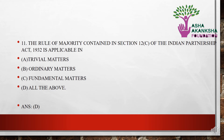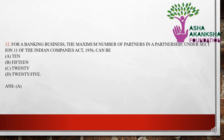The next question is: the rule of majority contained in Section 12, clause (c) of the Indian Partnership Act 1932 is applicable in which of the following? Options: (a) trivial matters, (b) ordinary matters, (c) fundamental matters, or (d) all of the above. The correct answer is option D — the rule of majority is applicable to all of the above: trivial matters, ordinary matters, and fundamental matters.